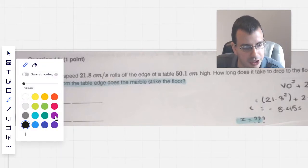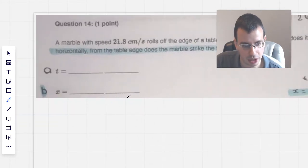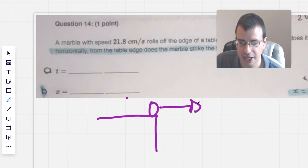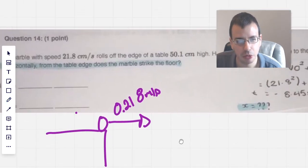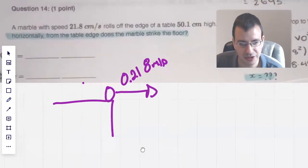Okay, so first thing I'm going to do is draw a picture because that's pretty much what I always do with physics questions and most math questions. Alright, so we've got a marble going this way, I'm going to say it's going 0.21 meters per second. Just convert it over to meters, meters is more standard and makes more intuitive sense to me.